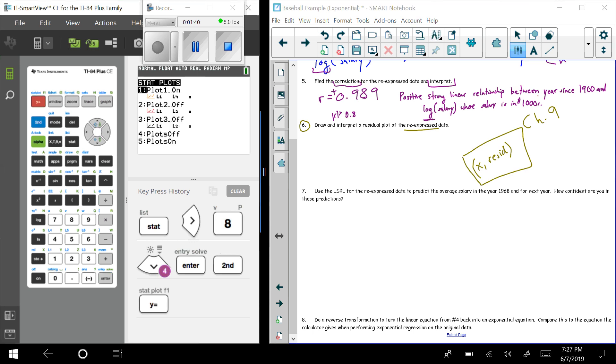So I go to second, y equals, bring up the stat plot, go to my first plot here. Now down below, I'm going to change, oh I don't need to change the first one. I still want x to just be the L1, right? The actual x's, but this needs to be resid.